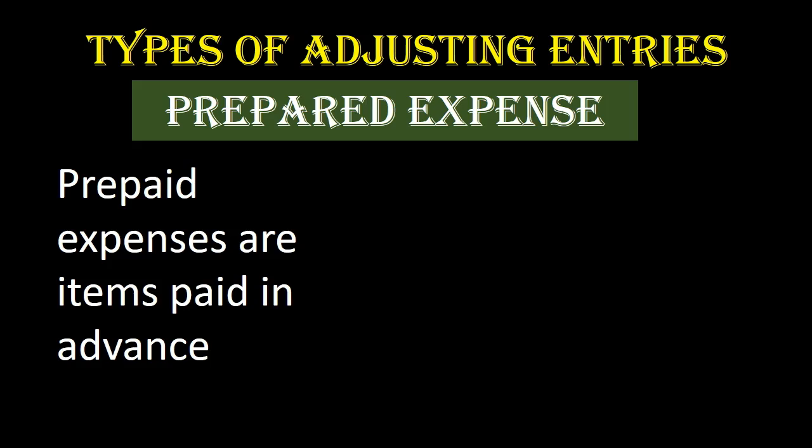The first type of adjusting entry is prepaid expenses. Prepaid expenses are items paid in advance. Although we have the word 'expenses' in prepaid expenses, prepaid expenses is actually an asset. That can be confusing, but the prepayment means we paid for something which will eventually be an expense — however it's not an expense under the matching principle until we have consumed it to help generate revenue in the same time period.